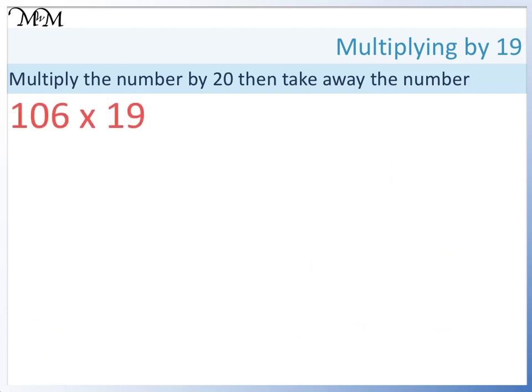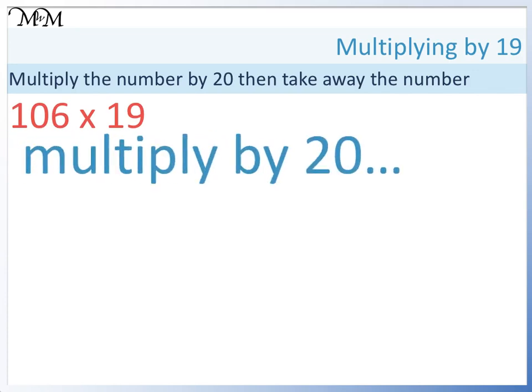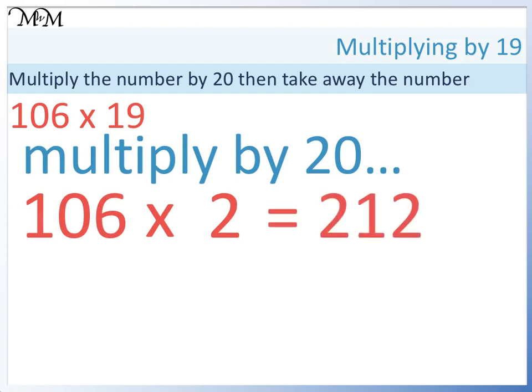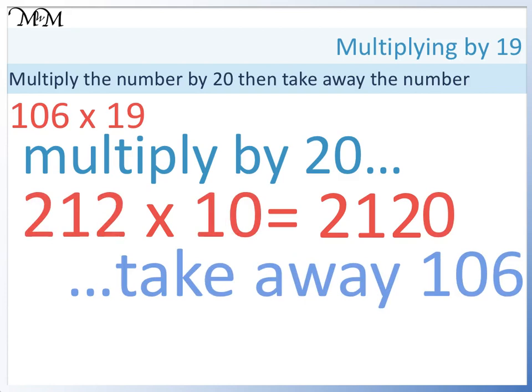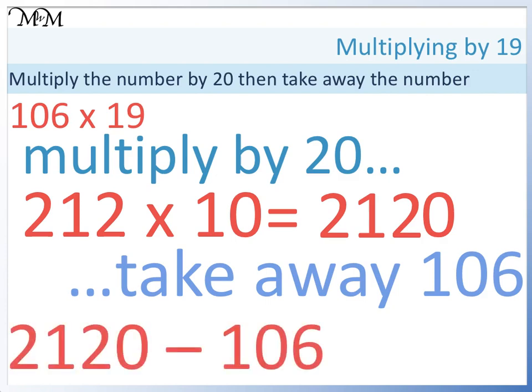106 times 19. Step 1: multiply by 20. 106 times 2 equals 212. 212 times 10 equals 2,120. Step 2: take away 106. 2,120 take away 106 equals 2,014.